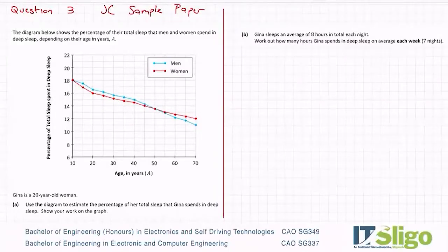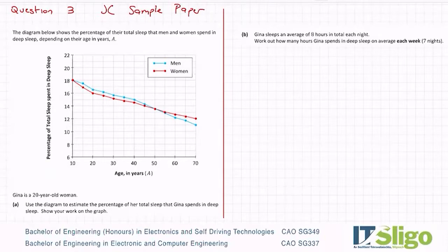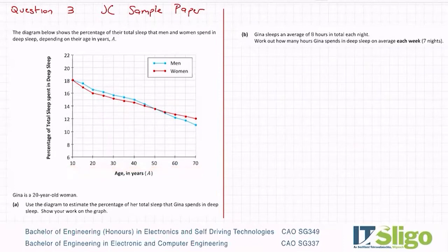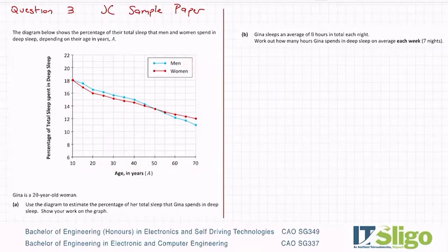Let's have a look at question three. The diagram shows the percentage of total sleep that men and women spend in deep sleep depending on their age. For anyone with a Fitbit or smart watch, you'd see different states of sleep — deep sleep, light sleep, and so on. Looking at the graph, ages run from 10 to 70 and percentages are between 6% and 22%, plotted for both men and women.